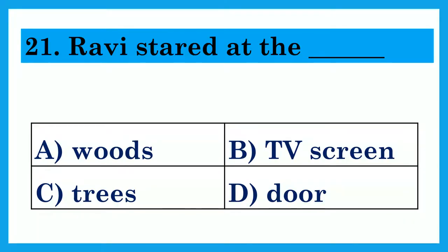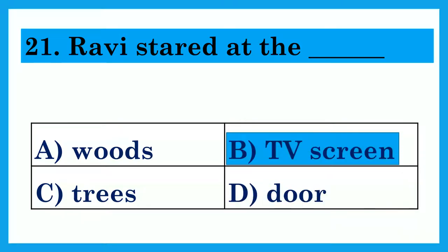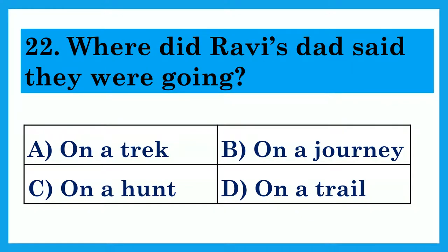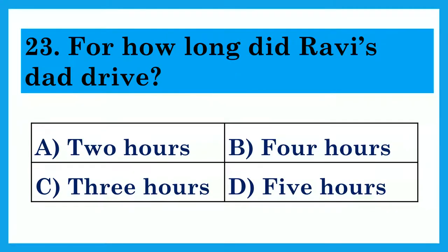Ravi stared at the dash. Option A: Woods. Option B: TV screen. Option C: Trees. Option D: Door. The answer is Option B: TV screen. Where did Ravi's dad say they were going? Option A: On a trek. Option B: On a journey. Option C: On a hunt. Option D: On a trail. The answer is Option B: On a journey. For how long did Ravi's dad drive? Option A: 2 hours. Option B: 4 hours. Option C: 3 hours. Option D: 5 hours. The answer is Option A: 2 hours.